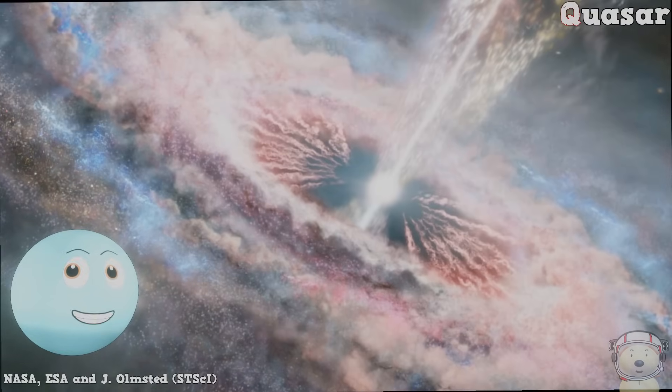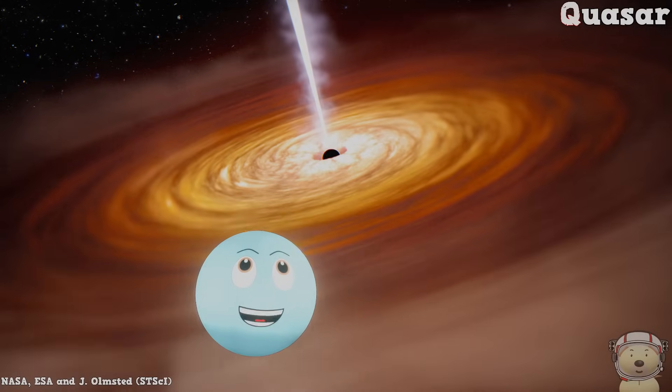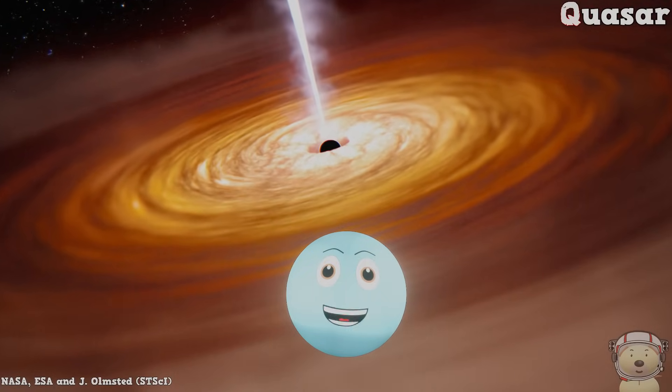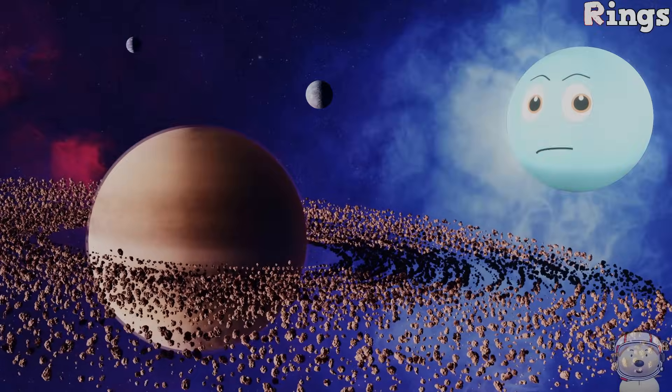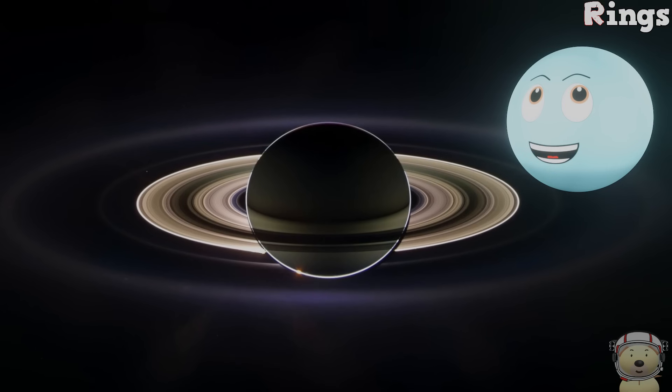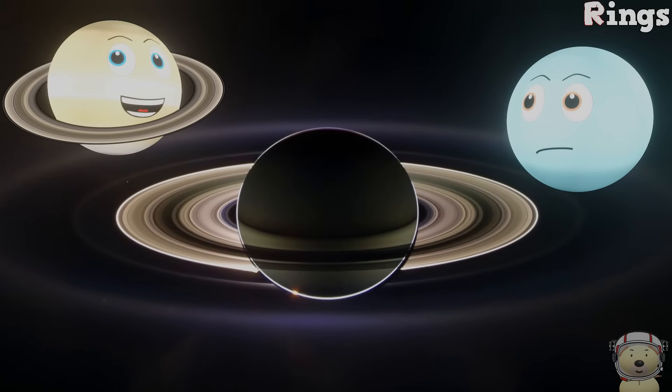Q is for quasar, brightest objects there are, sending energy and light out really far. R is for rings, gas giants have them you see. Biggest in the solar system, that would be me.